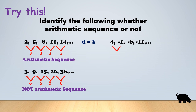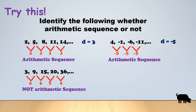Next: 4, -1, -6, -11. Getting the differences between consecutive terms: -5, -5, -5. We have a common difference of -5, so this is an arithmetic sequence.